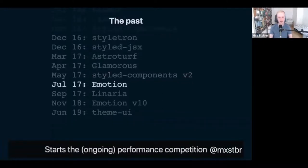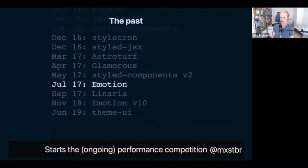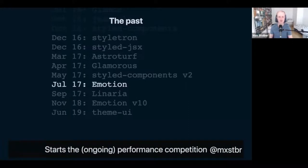In July 2017, Kai Hohenberger and Mitchell Hamilton released Emotion. They came on the scene and said they support all the CSS-in-JS APIs people like, but they're 10 times faster than everybody else. Suddenly all the other CSS-in-JS libraries went, 'oh shit, they're 10 times faster — what are we doing wrong?' Emotion really kicked off the still-ongoing performance competition. Without that, we'd probably still be pretty slow. Nowadays, CSS-in-JS is in many apps faster than just including CSS files because of all the performance work everybody's been doing since then.